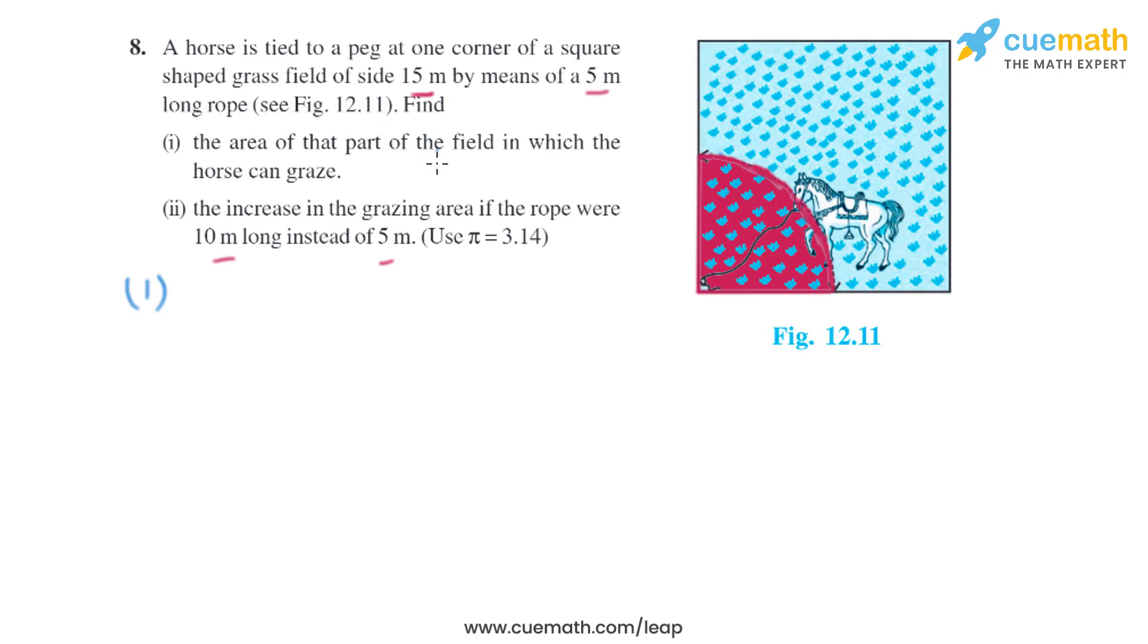We know the formula: theta divided by 360 degrees multiplied by pi r square. We know the angle is 90 degrees as it is a square.